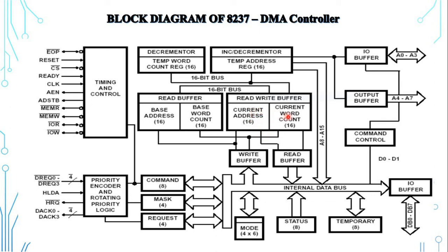The third register is the current word count register (CW), a 16-bit register that determines the number of data transfers to be performed. After each data transfer the word count is decremented. The intermediate value is stored in the current word register. When the count value becomes 0, an EOP end of process signal is generated. After the EOP, this register may be re-initialized using an auto-initialization command signal.